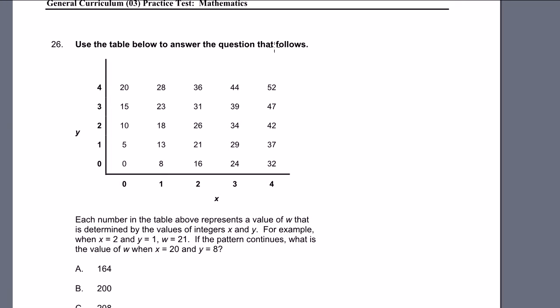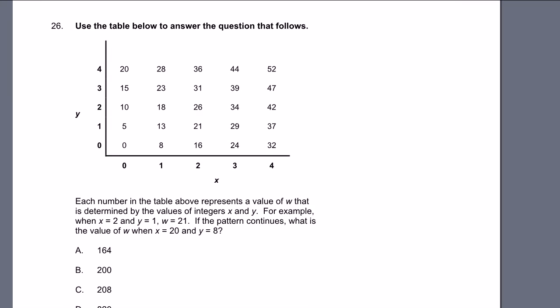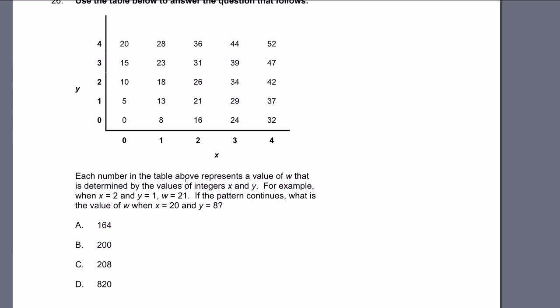Use the table below to answer the question that follows. We have an x-axis and then we have a y-axis. Each number in the table above represents a value of w that is determined by the values of integers x and y. For example, when x equals 2, y equals 1, w is equal to 21. If the pattern continues, what is the value of w when x equals 20 and y equals 8?